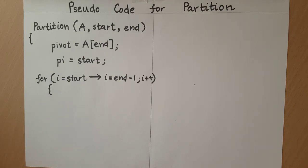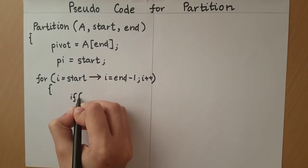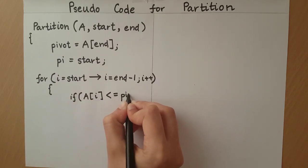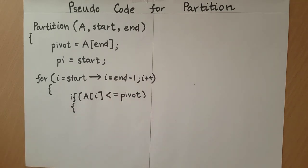For each element at index i, we will have to check whether the condition that pi is the correct index has been violated, and if so, do the necessary changes. How do we check if the element at i violates this condition? If the element at i is less than the pivot, then we say that the condition has been violated. Let us write down that condition. This is the condition if the element at i is less than or equal to the pivot.